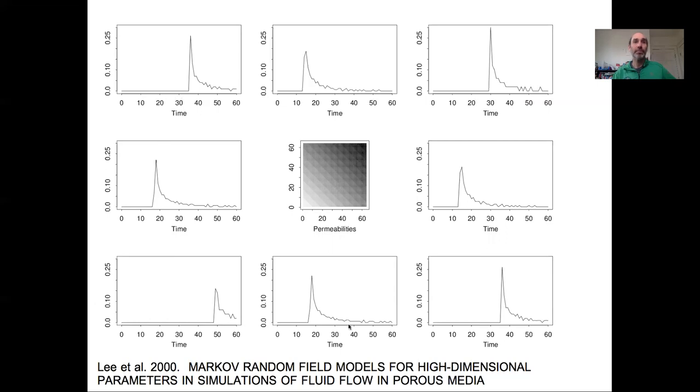So I believe in this example, these plots represent time series data coming from the four corners and then the midpoints of the edge. There was an injection at the center, and what we're measuring is injection occurs at time zero. And then what are the concentrations we observe at different locations? So we actually only have time series at nine points, and we're trying to infer this whole grid.